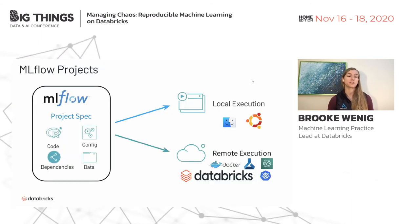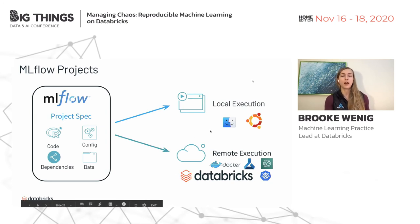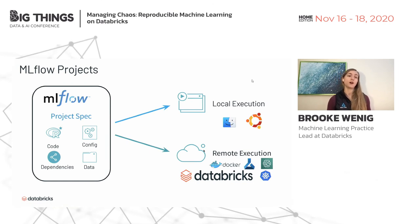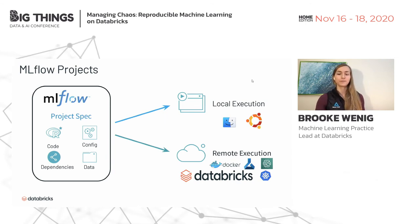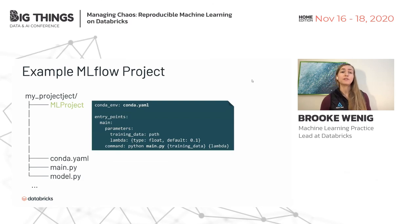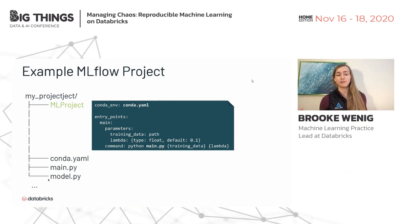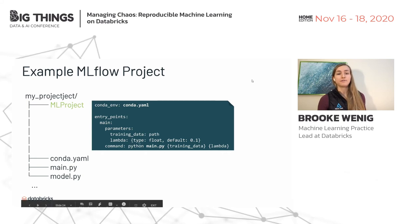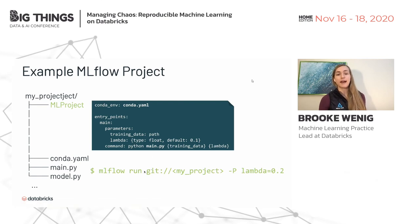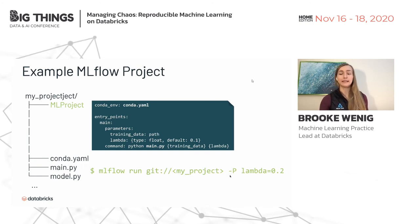With MLflow Projects, you define a project specification — your code, configuration, data, and any dependencies. You can then launch it locally on your MacBook or on any remote execution environment. For example, you can call mlflow run project and launch it on a Databricks cluster from your laptop. Projects have a standard format with MLproject and conda.yaml files. You can specify default parameters like lambda=0.1 and override them at runtime by passing --P lambda=0.2.